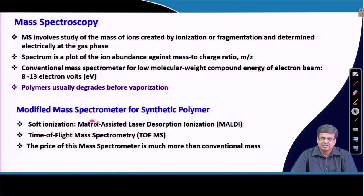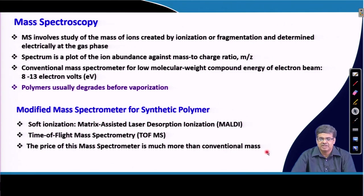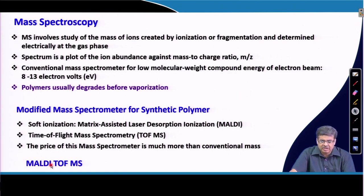For that, modified mass spectrometers are used for synthetic polymers. In this case, soft ionization is done using a matrix — we call this matrix-assisted laser desorption ionization. The time between the detector and the origin is measured, which is why we call it time of flight (TOF). In short, we call this MALDI-TOF MS.